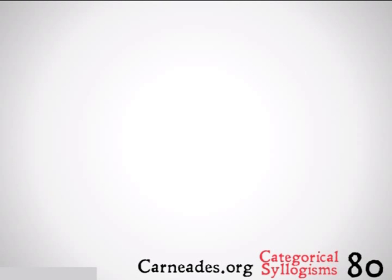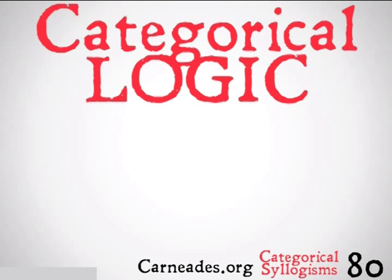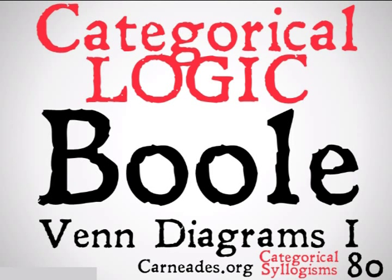Welcome back to 100 Days of Logic with 90 Second Philosophy and Carneades.org. Today we're continuing with Categorical Logic and Categorical Syllogisms. We're going to be looking at Venn diagrams, specifically Boolean Venn diagrams.